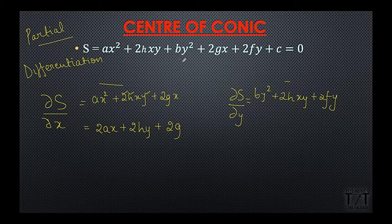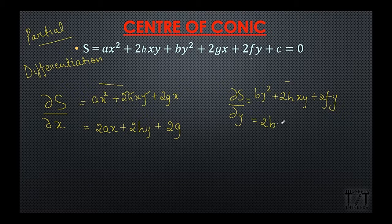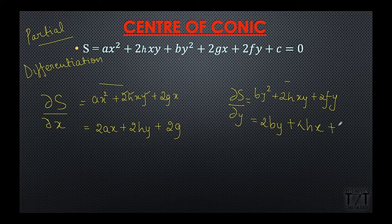Partial differentiation means we take the variable by which we are differentiating and treat all other alphabets, constants, variables, or coefficients as constant terms. Similarly, ∂S/∂y = 2by + 2hx + 2f, obtained by partially differentiating S with respect to y.